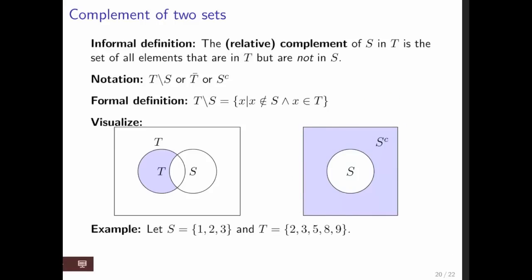So here we see that 2, 3 are in both T and S. So the elements that are in T but not in S are these elements right here. And that's then the relative complement of S in T.